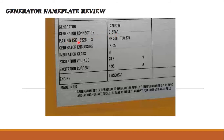The design follows ISO standard 8528-3. The generator enclosure is IP23, meaning it is not waterproof — this generator is designed for indoor use and cannot be operated in an outdoor environment. Insulation class is H, which means the winding can withstand up to 180 degrees Celsius, with the generator capable of delivering output at temperatures up to 55 degrees Celsius.